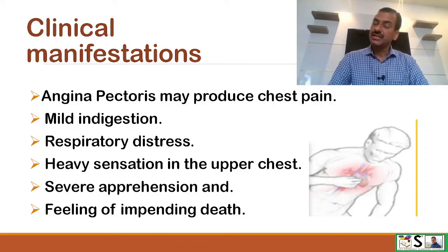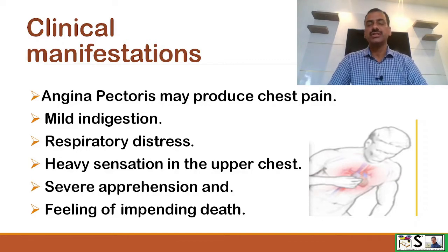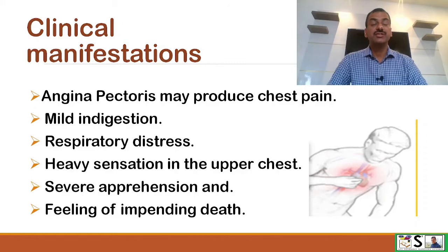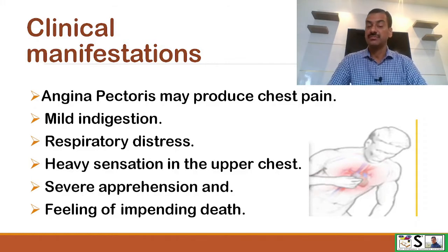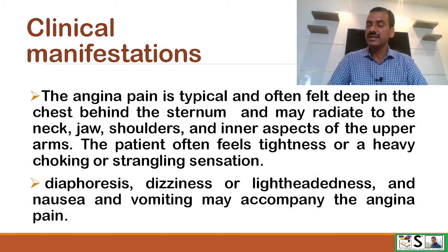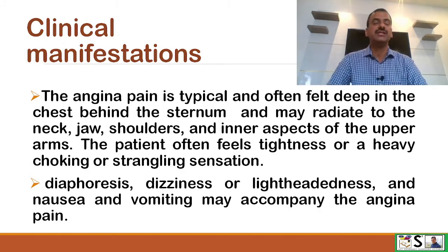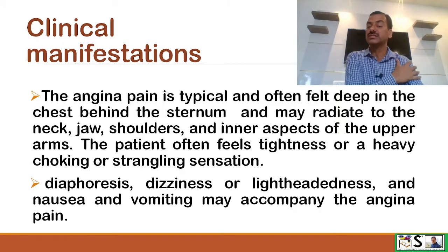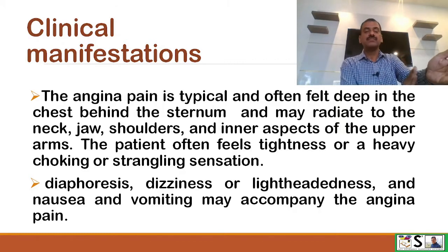What are the clinical manifestations of angina? Angina pectoris may produce chest pain. Mild indigestion is seen. Respiratory distress is present. Heavy sensation of the upper chest. Some apprehension, anxiety, and a feeling of impending death. The angina pain is typical and often felt deep in the chest, behind the sternum, and may radiate to the neck, jaw, ear, and shoulders and the inner aspect of the upper arm.